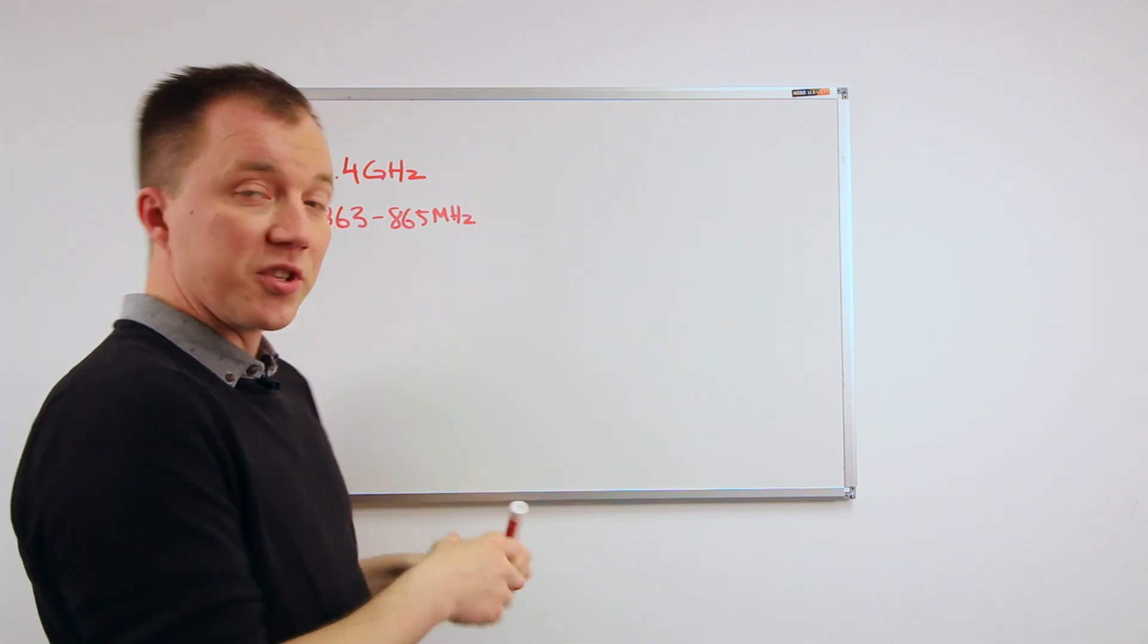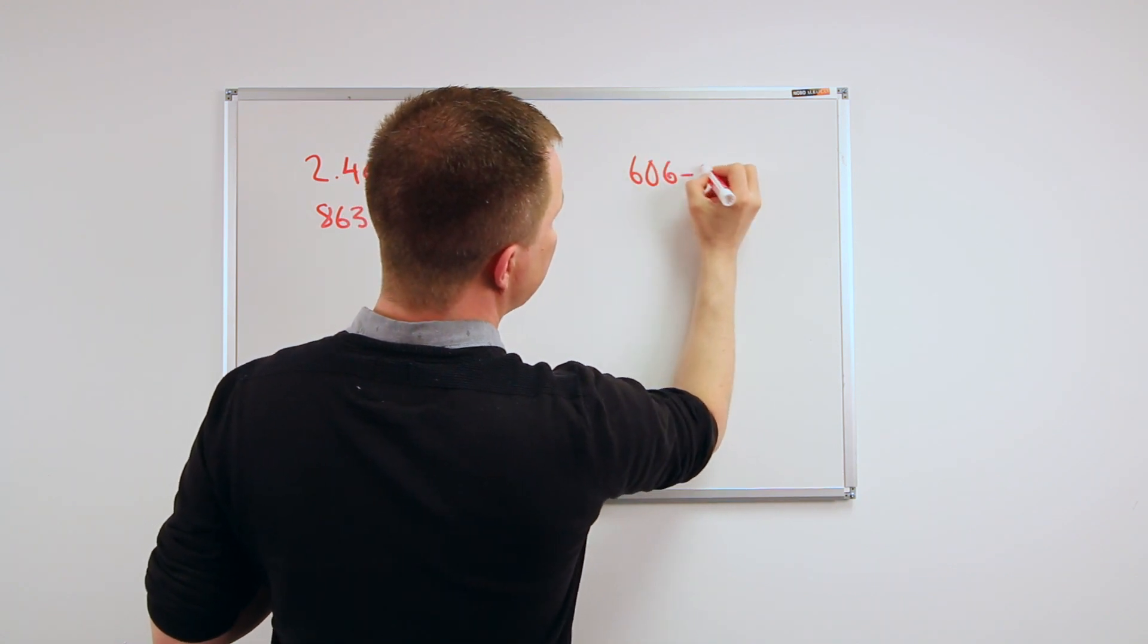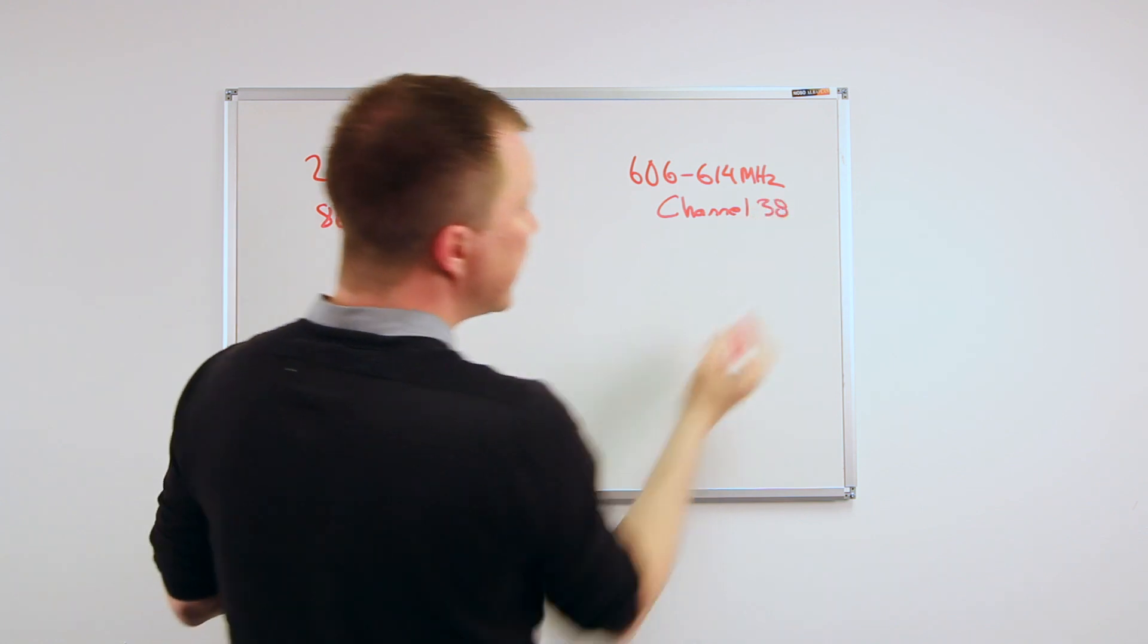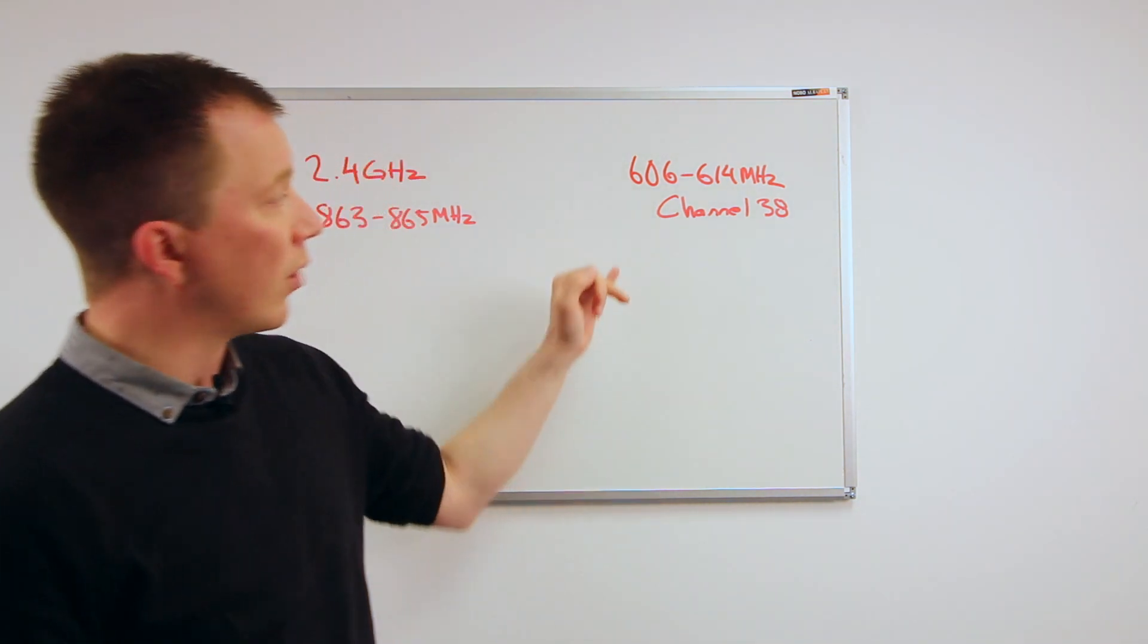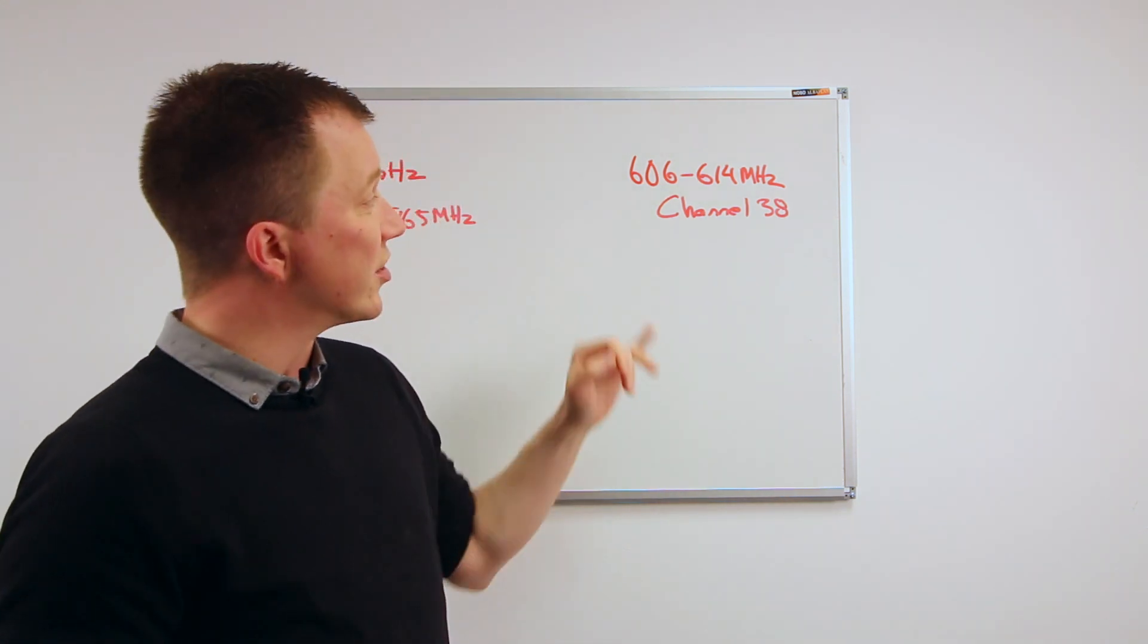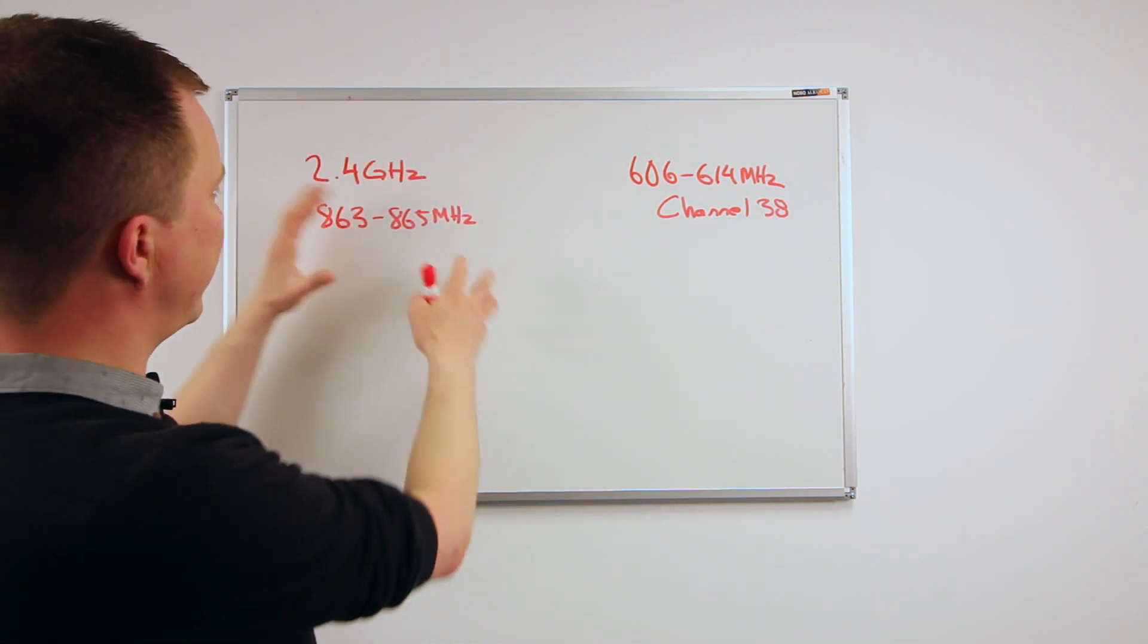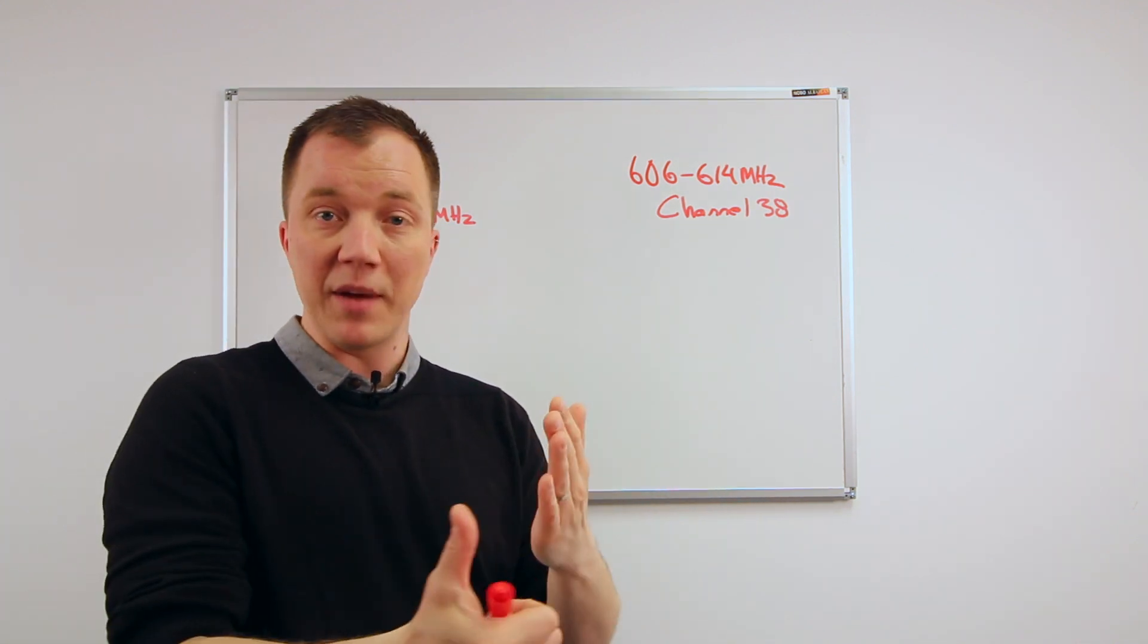Moving into the other parts of spectrum which do require a license for legal operation. The first one is 606 to 614 megahertz, which is also referred to as channel 38. 606 to 614 meg is available across the UK at a nominal license fee. You can use this all across the nation, and it is solely dedicated for the use of radio microphones and in-ear systems. One of the immediate benefits of using channel 38 is that you don't have this inherent sharing that you do get with some of the license free bands.